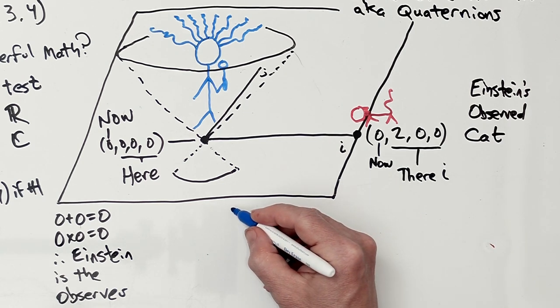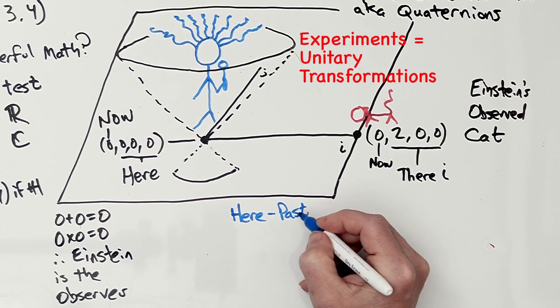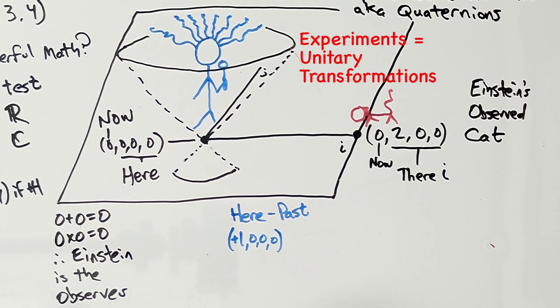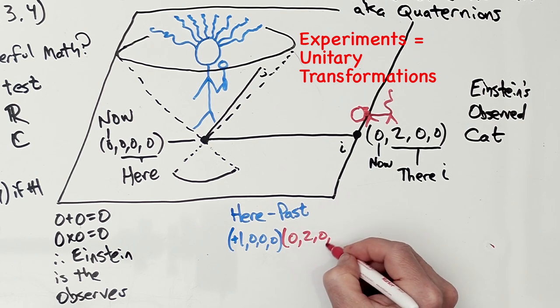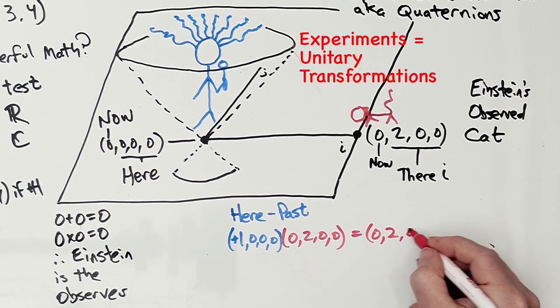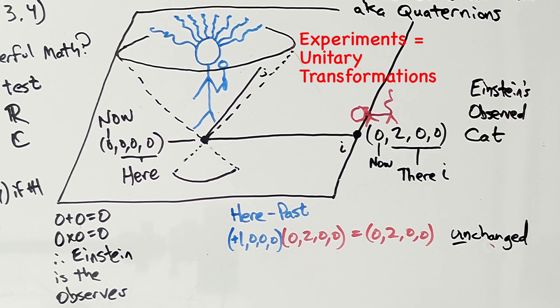So Einstein, being a theorist, is going to do some experiments. He's going to use the here past. That's, I'm arguing, (+1, 0, 0, 0) times the position of the cat (0, 2, 0, 0). And it ends up exactly where it was. It's unchanged. And that's the nature of the past. The past can't change stuff.